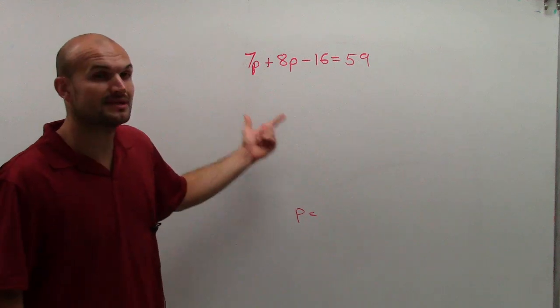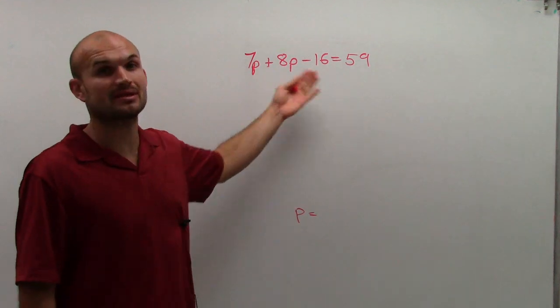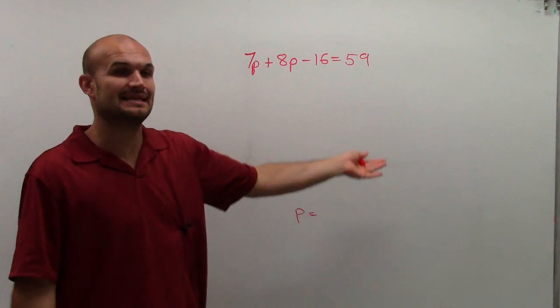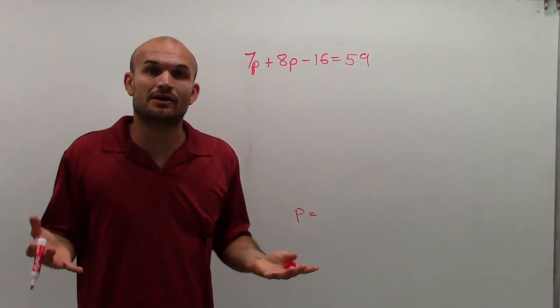So I have 7p plus 8p, or 7 times the number plus 8 times the number, minus 16 equals 59. What is the value of that number?